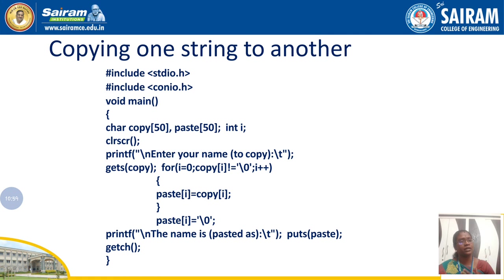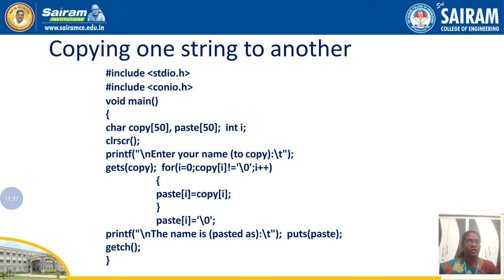Now the string is copied. To display the result, I use a printf statement followed by puts(paste) to print the pasted string. That is how we copy the content of one string into another string. So, in this video we have discussed two basic string manipulation functions: counting the number of characters in a string, and copying one string into another. I will cover the remaining manipulation functions in the next video. I hope you understood — see you next time, bye, take care.